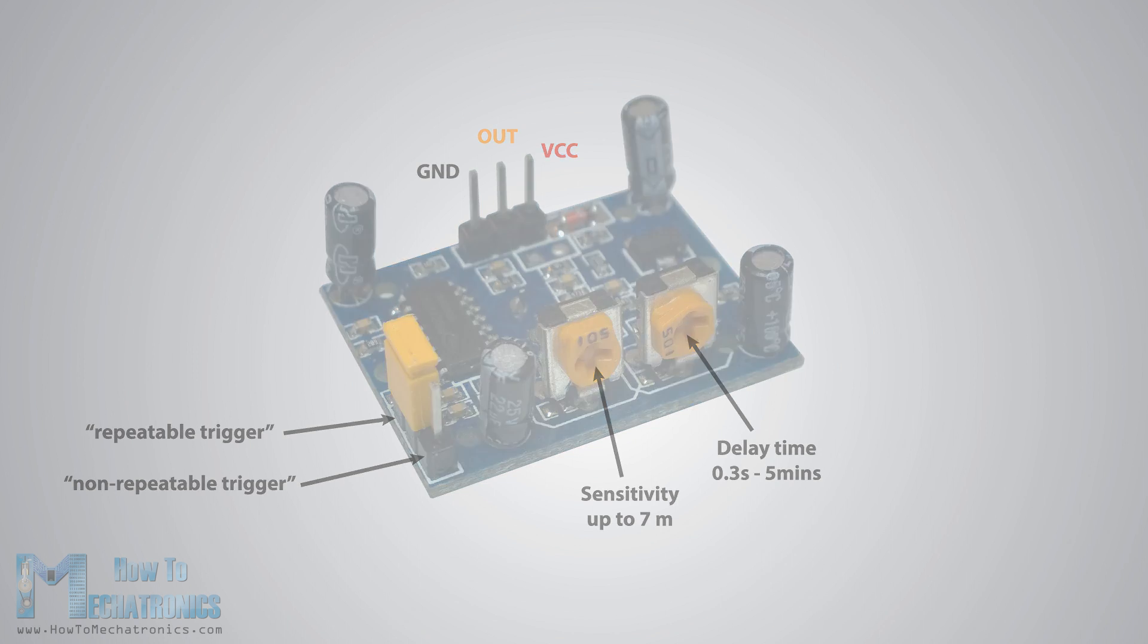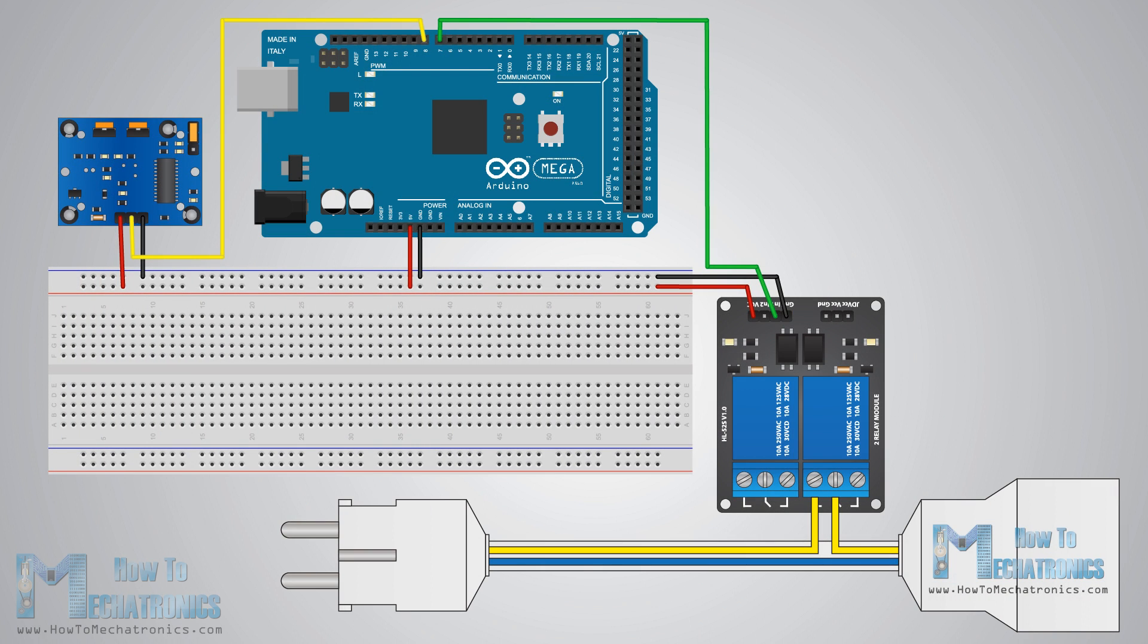As an example for this tutorial, I will make a circuit that will turn on a high voltage lamp when the sensor will detect an object. Here is the circuit schematic.